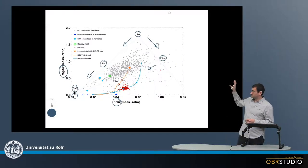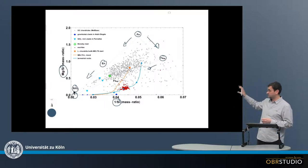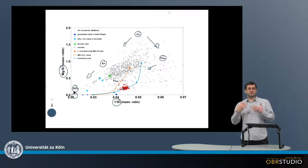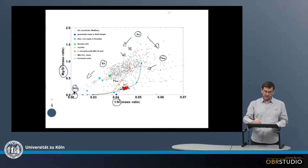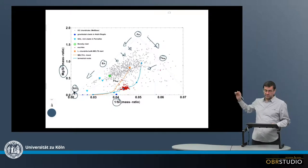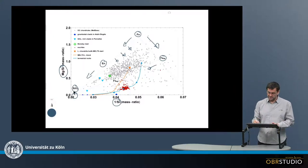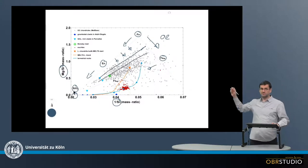Now we can take all the data from MACBase bulk chondrule data and plot this into this diagram. What we observe is that ordinary chondrite chondrules are not very magnesium-rich, so they are a little bit shifted from the forsterite-silica mixing line towards more iron-rich compositions. However, all the chondrules here plot on mixing lines between olivine and silica.